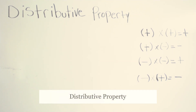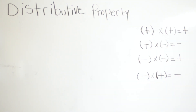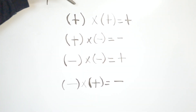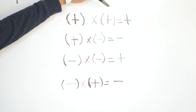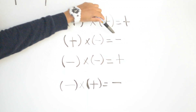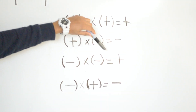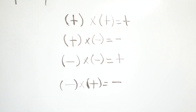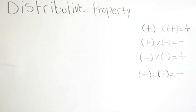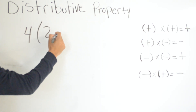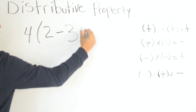Today we are going to be talking about distributing property in algebraic expressions. But before we continue on the problems, we're going to do a review on negatives and positives. Remember: a positive times a positive is always going to give us a positive, a positive times a negative is always going to give us a negative, a negative times a negative gives us a positive, and a negative times a positive equals a negative. Our first problem will be four times two minus three.